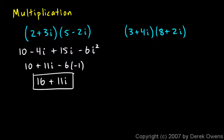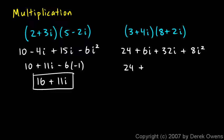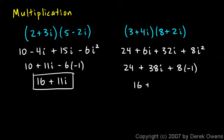Now let's look at (3 plus 4i) times (8 plus 2i), again using FOIL. First: 3 times 8 is 24. Outer: 3 times 2i is positive 6i. Inner: 4i times 8 is positive 32i. Last: 4i times 2i is plus 8i squared. Simplifying: keep 24, combine 6i and 32i to get 38i, and 8i squared becomes negative 8. So 24 minus 8 gives 16, and the final answer is 16 plus 38i.